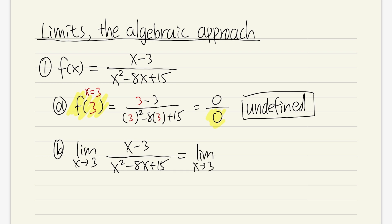So let's take a look at the limit. As x approaching 3, on the top, we still have x minus 3. On the bottom, factor it. We get x minus 3 times x minus 5.